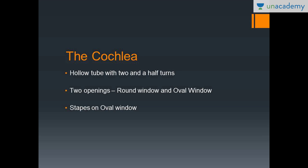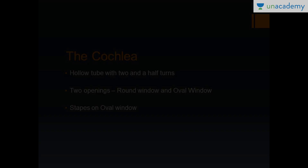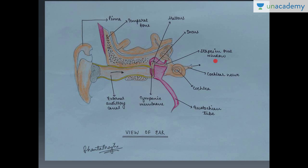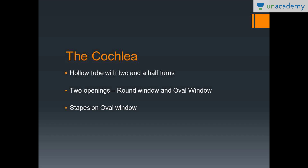The cochlea is a hollow tube with two and a half turns and has two openings: the round window and the oval window. The stapes sits on the oval window — please remember this anatomy. There is no structure on the round window. The cochlea is a hollow tube that takes two and a half turns.